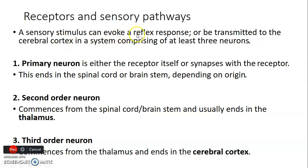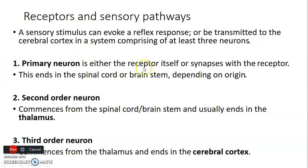This can be transmitted to the cerebral cortex in a system that comprises three neurons. We have a primary or first order neuron, a second order neuron, and a third order neuron. The primary neuron is usually either a receptor itself or it synapses with the receptor, and then it may end in the spinal cord or brainstem. The second order neuron carries information from the spinal cord and brainstem to the thalamus. Then the third order neuron goes from the thalamus to the cerebral cortex.